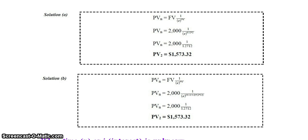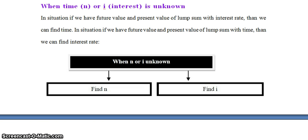The present value for 2 years (monthly discounting) is equal to Rs. 1573.32. This is the answer, and notably the answer is the same for both the annual and intra-yearly continuous discounting cases.